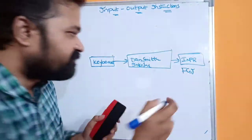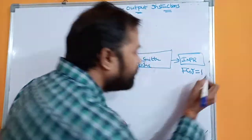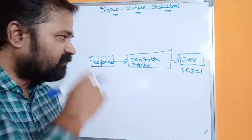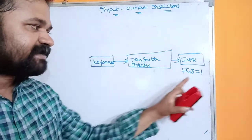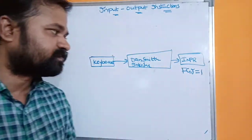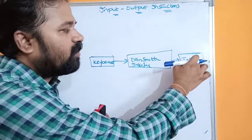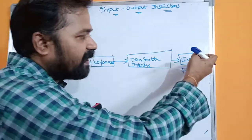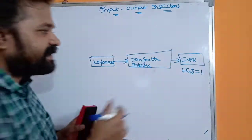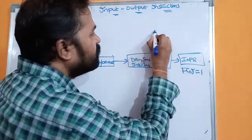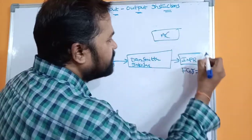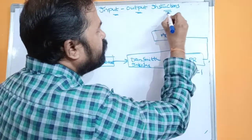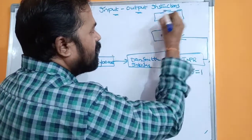At the input register, a flag called FGI is maintained. FGI stands for Input Flag. FGI is set to 1 if the input register contains a character, whereas if the input register does not contain any character, FGI is cleared to 0. Assuming we have typed a character, FGI is 1, and the input register passes that character to the accumulator.